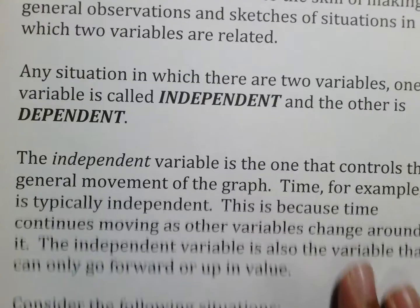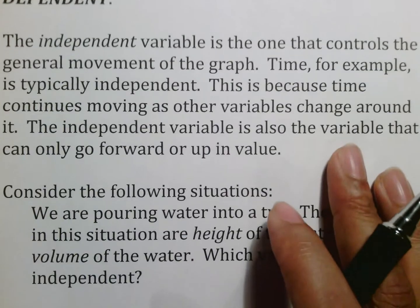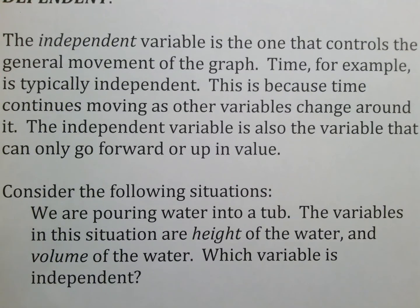The independent variable is the one that controls the general movement of the graph. Time, for example, is typically independent because time continues moving and other variables change around it, so that independent variable is also a variable that can only go forward or up in value. Time doesn't go backwards, which is why time can be independent.